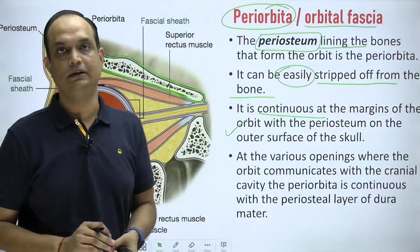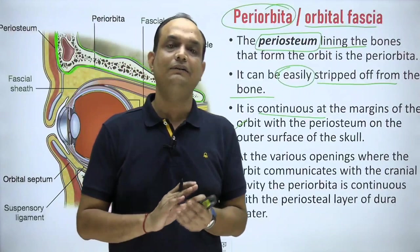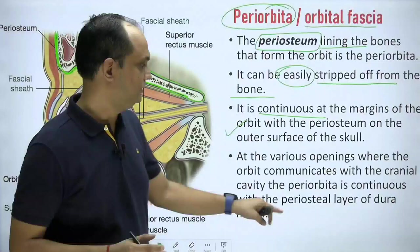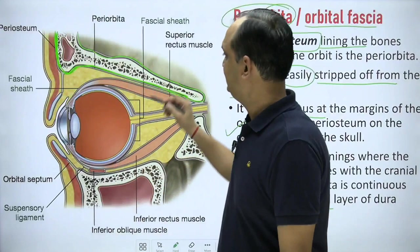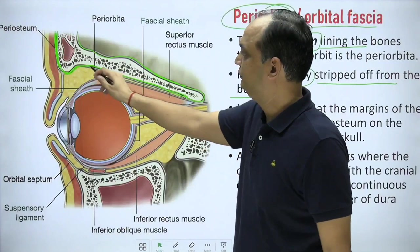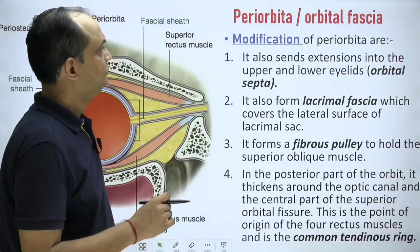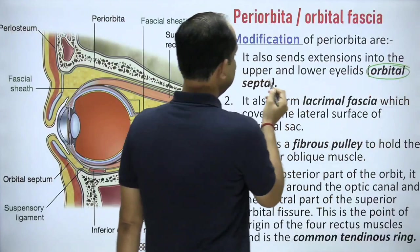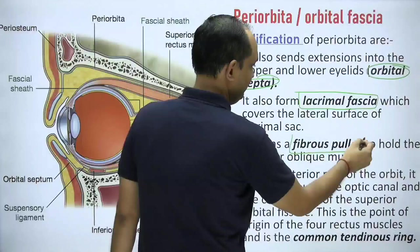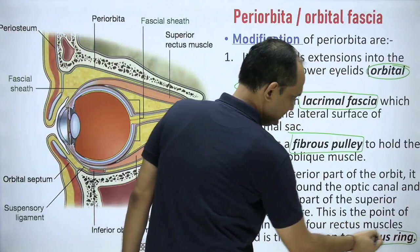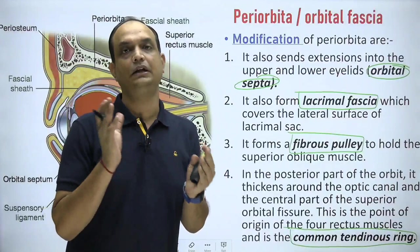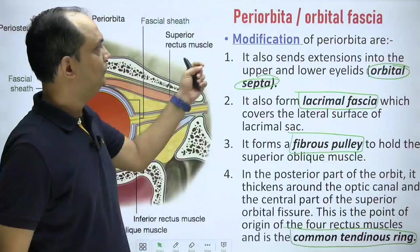At various openings where the orbit communicates with the cranial cavity, the periorbita continues with the periosteal layer of dura mater. Inside the cranial cavity, you have two types of dura: meningeal dura and endosteal dura. That endosteal dura is also the periosteum. The periosteum of the inner side of the cranial cavity continues with the periosteum of the orbit. There are four important modifications of the periorbita: orbital septum, lacrimal fascia, fibrous pulley, and common tendinous ring of Zinn.